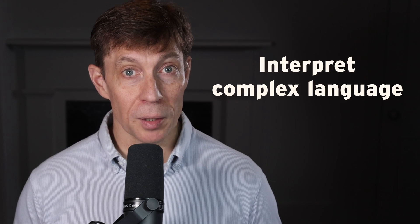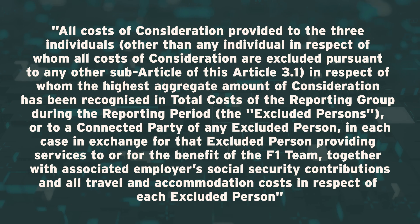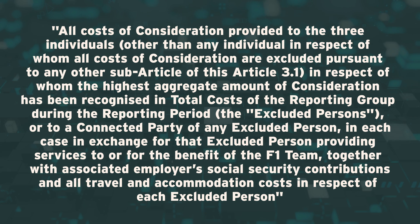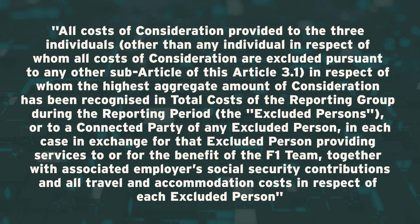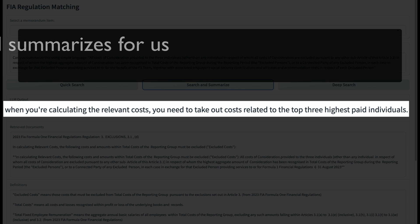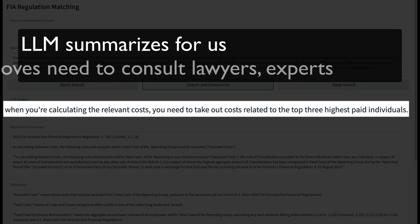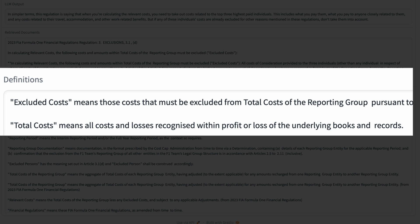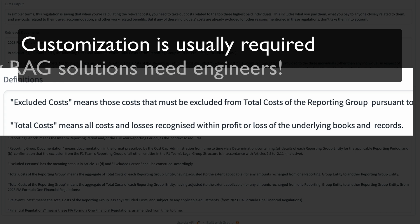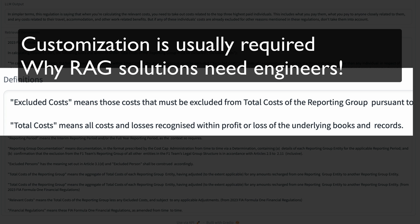In our second scenario, we're attempting to translate arcane and technically complex language into layman's terms. Take a look at this paragraph. I honestly can't understand this paragraph without help from a lawyer or a significant investment of time. With Search and Summarize, we can translate it into simple language: when calculating costs, exclude the three highest paid individuals. This I can understand. Note that we're not just passing the relevant rules, but we also pass specific definitions. This type of customization is necessary to get most RAG applications functioning as desired.